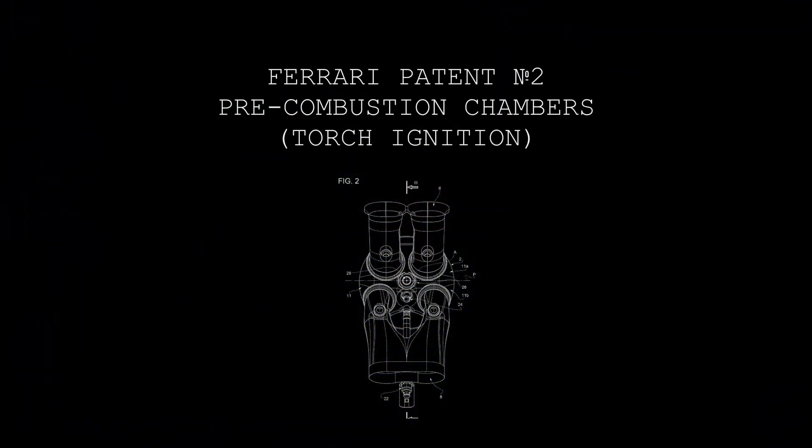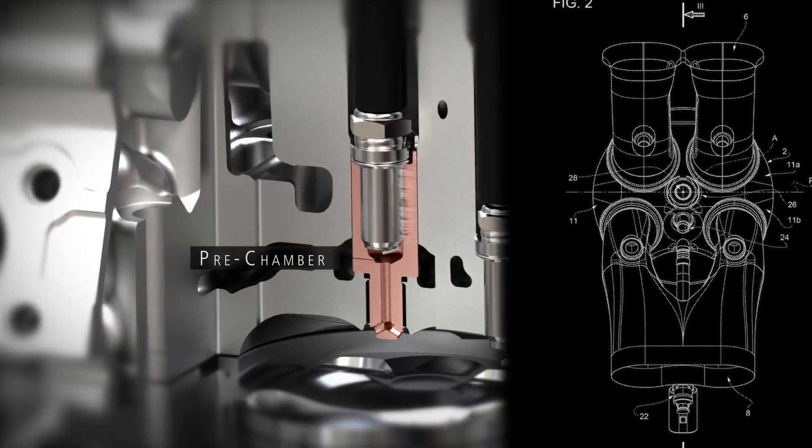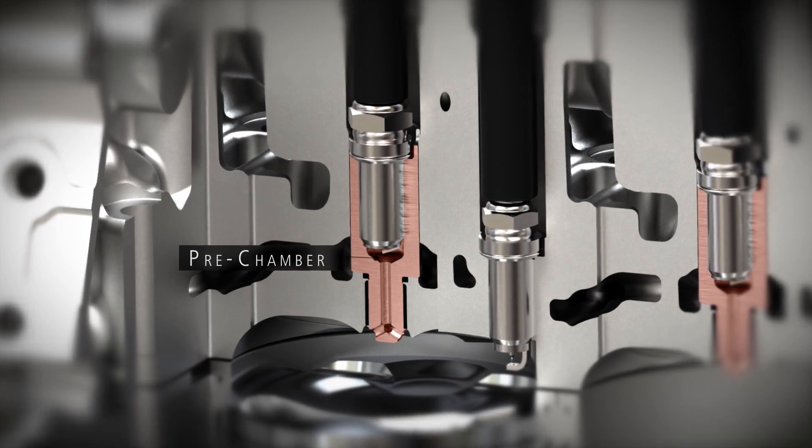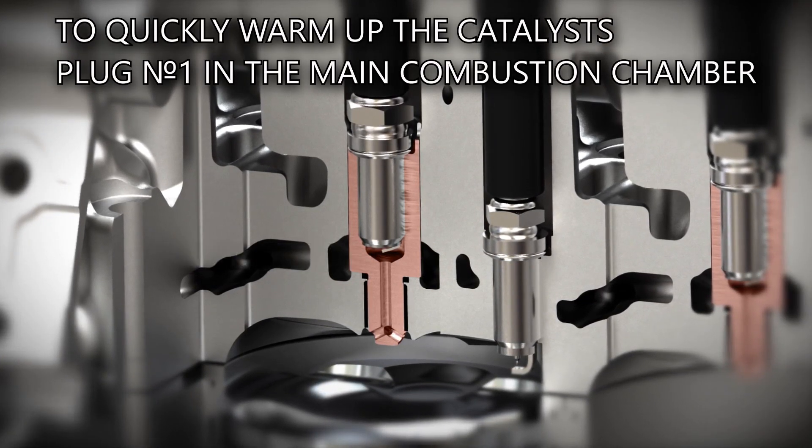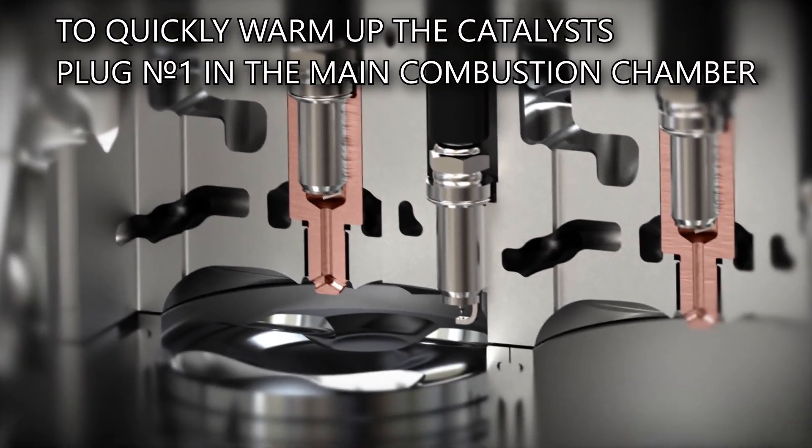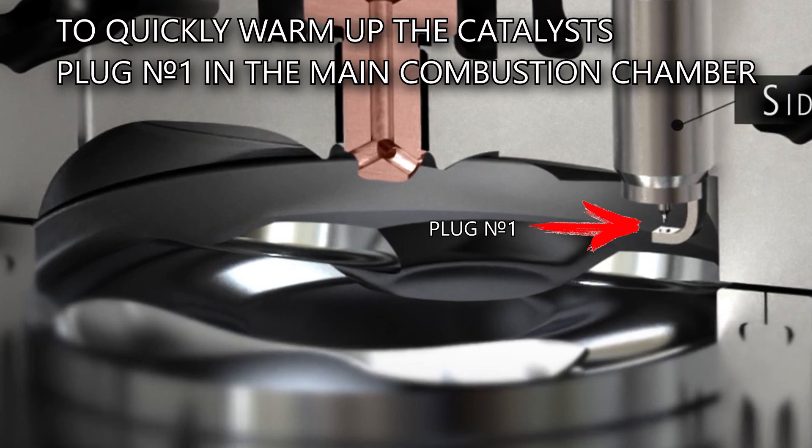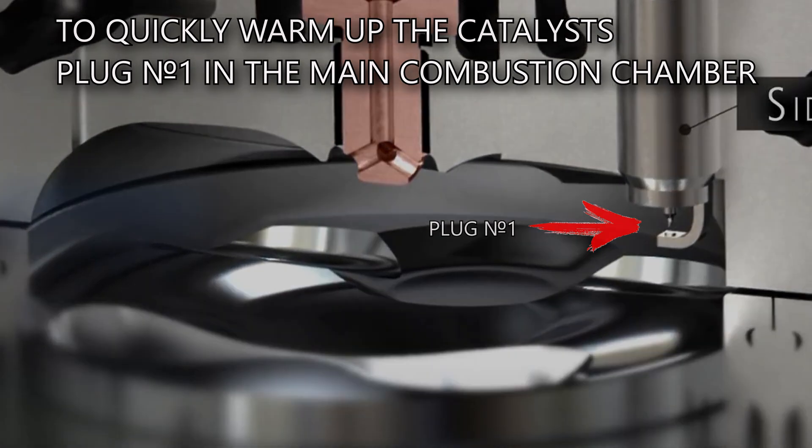But Ferrari also has another patent designed specifically for the Euro 7 emission standards. This involves using pre-chambers and two spark plugs. According to the patent, a small amount of fuel is injected before the first spark plug ignites to improve cold starts and low load performance. This results in quicker exhaust temperature buildup and faster catalyst warming, which is a big win for emissions.